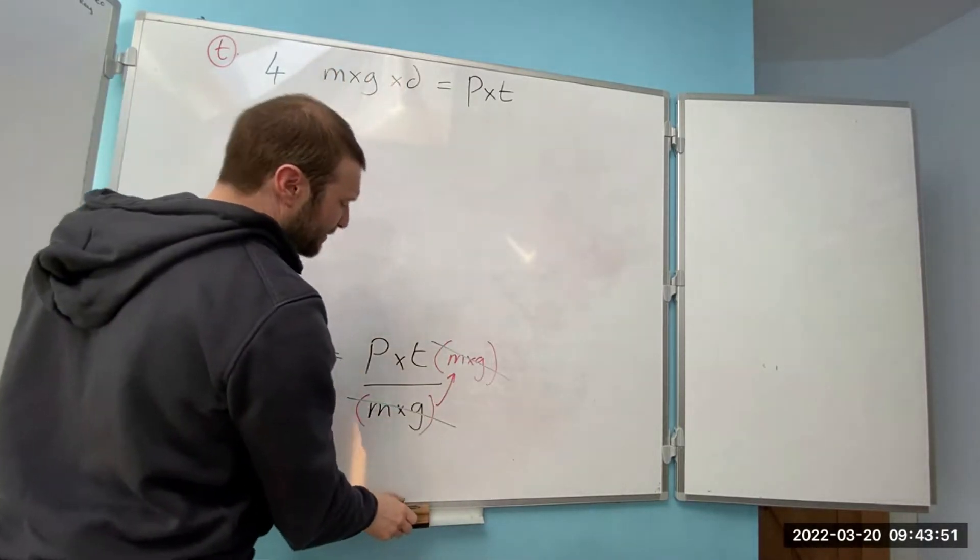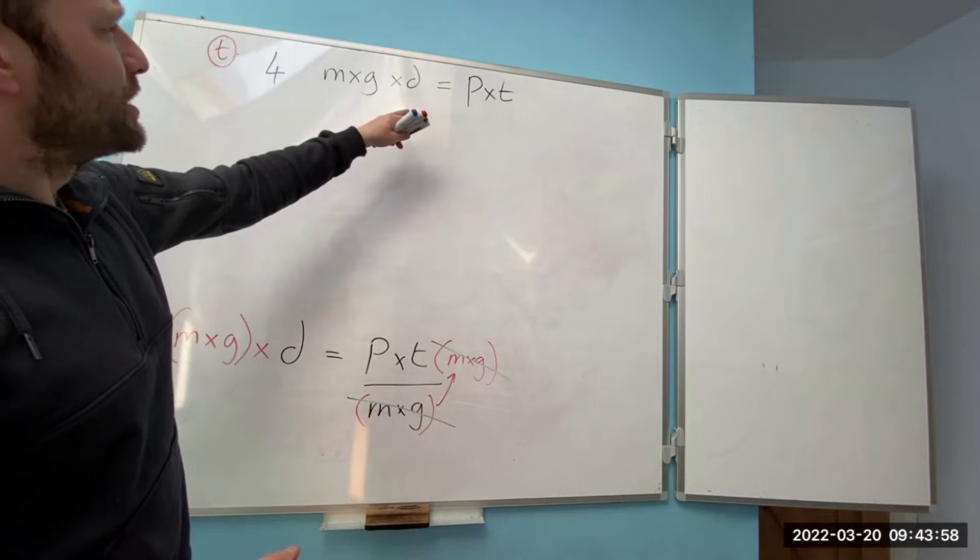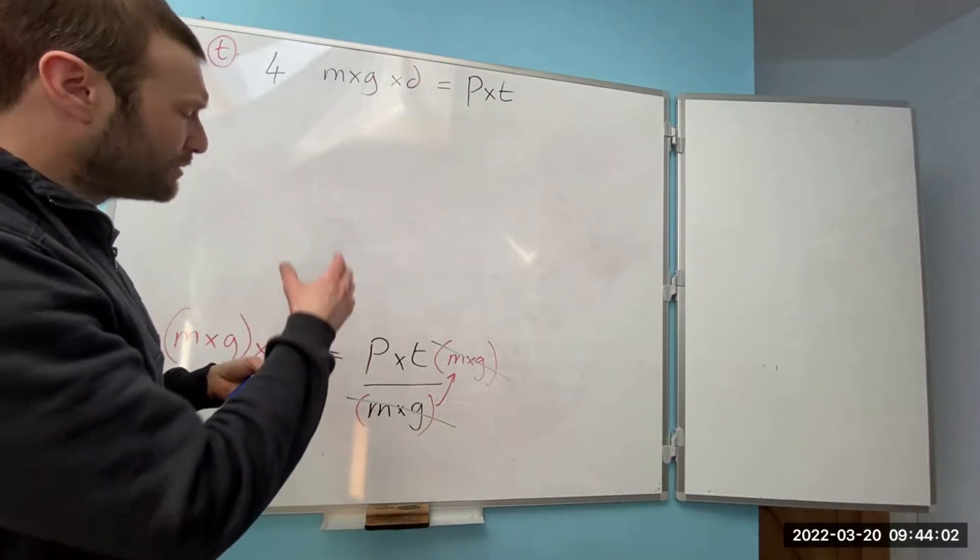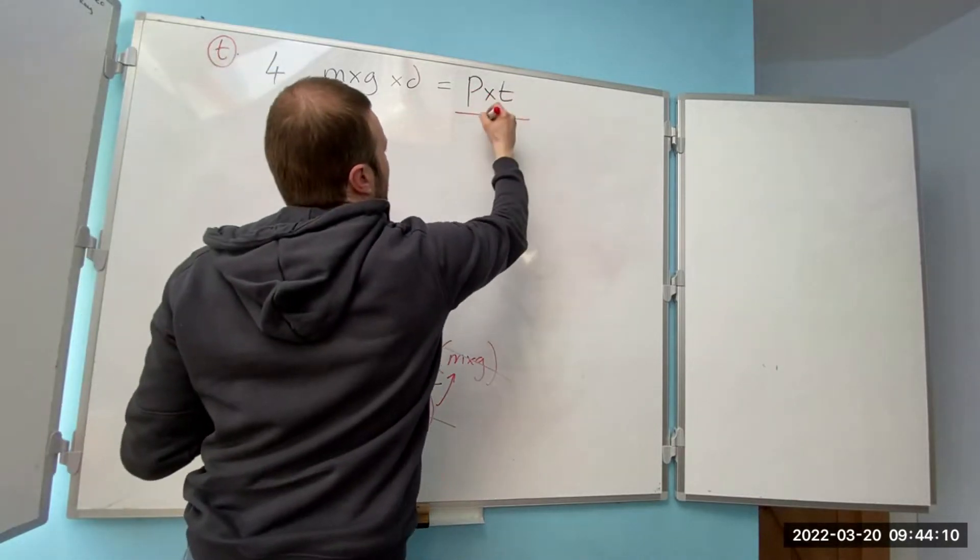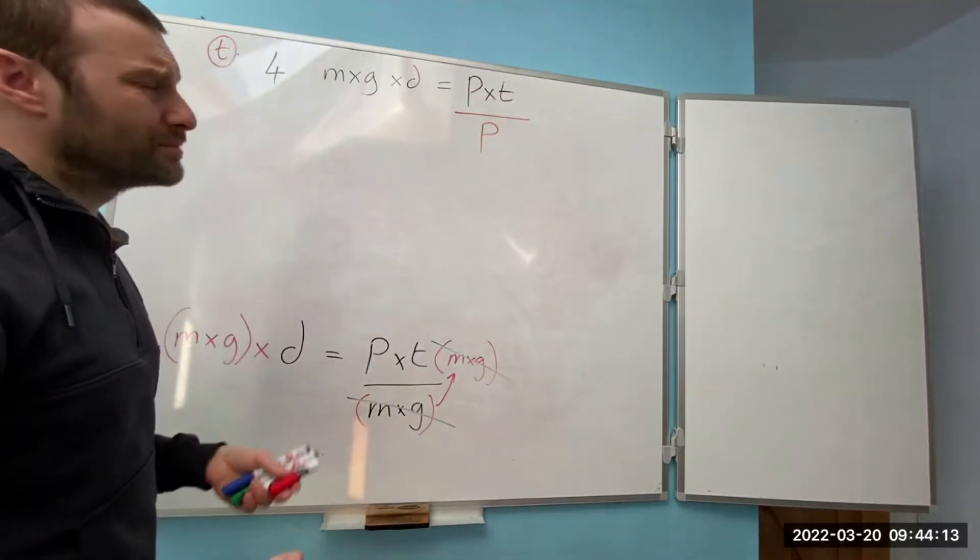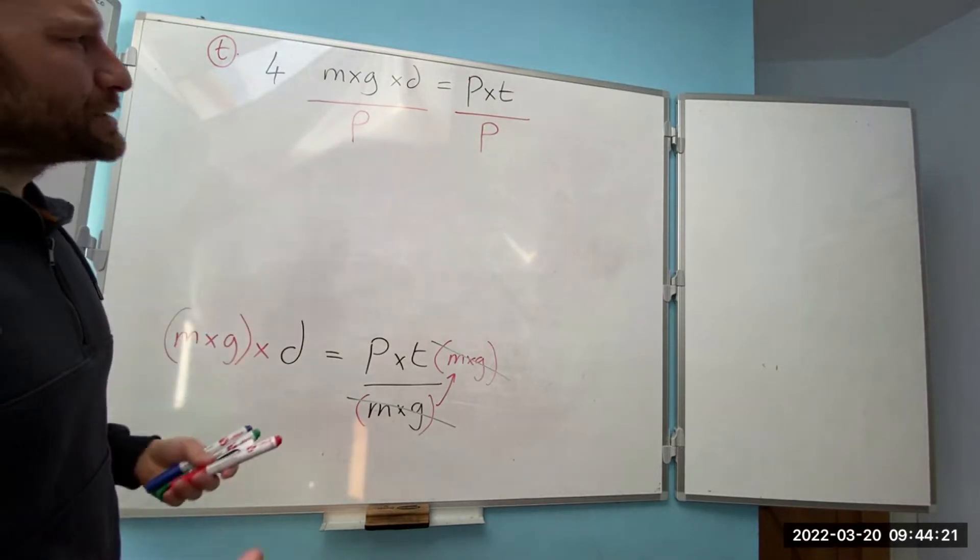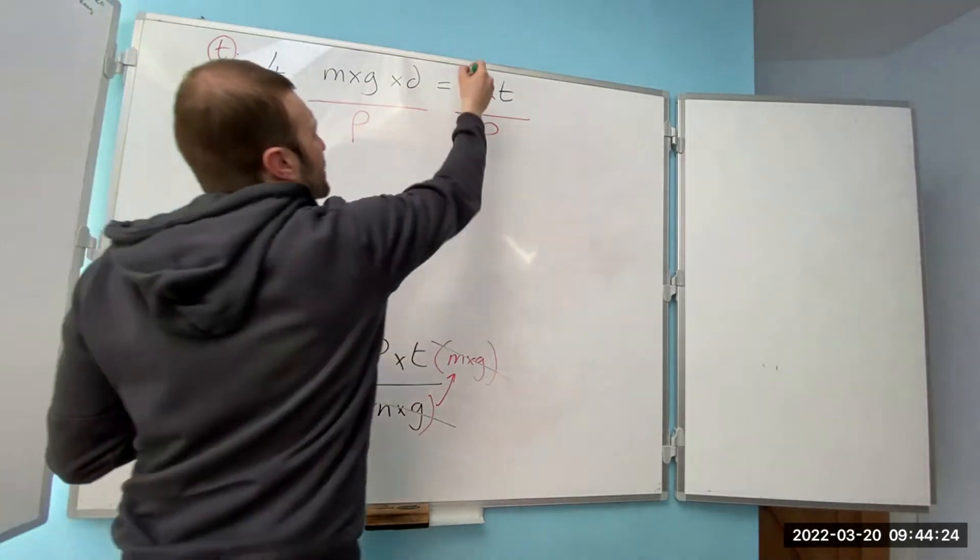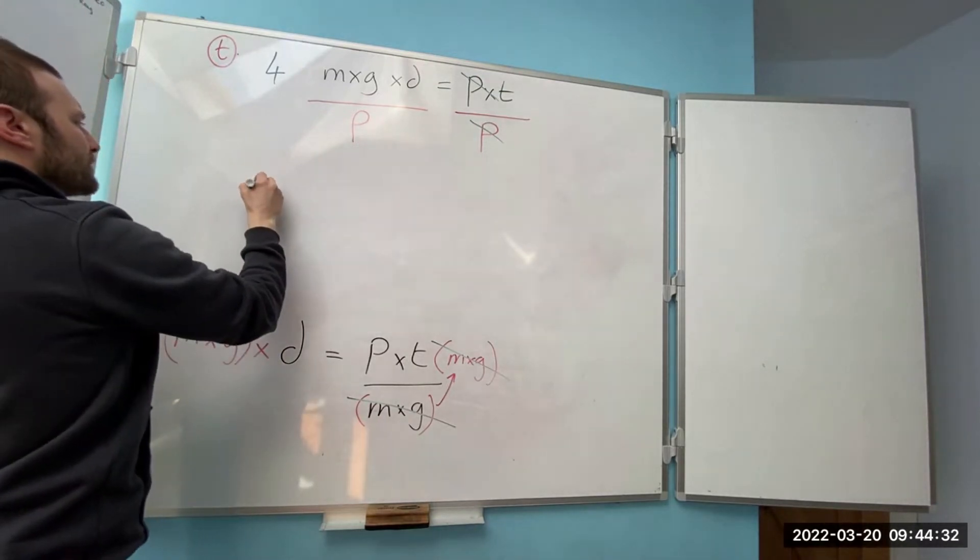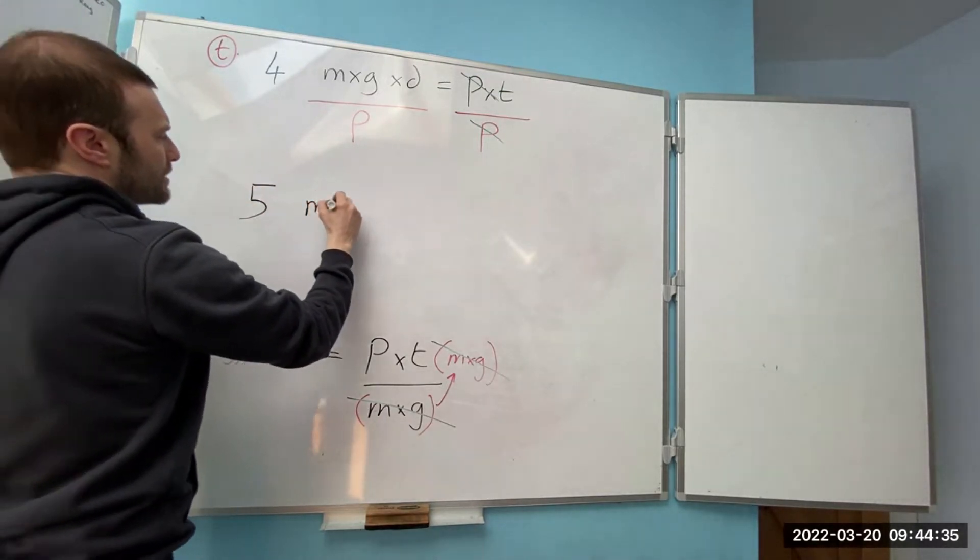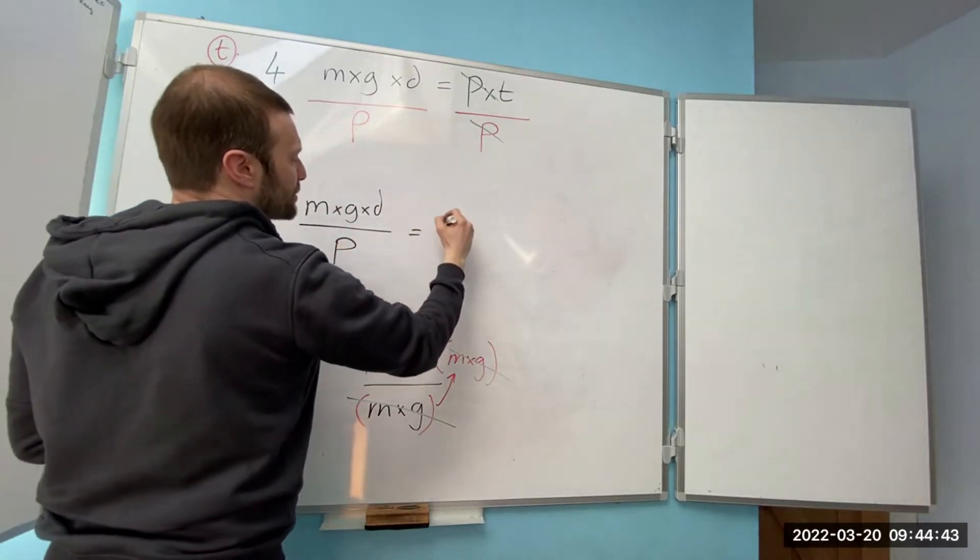I'm just going to remove those brackets because they're no longer needed anymore. Mass times gravity equals force, so that won't make any difference. At the moment we've got everything on the same level. I'm looking for time. I've got time times power, so I need to do the opposite of times, that's divide. So I divide by P. Whatever I do that side I do that side. It's balanced but untidy. Step five, we've got mass times gravity times distance divided by power equals time.